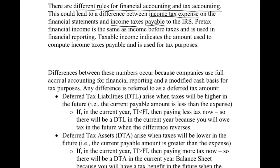Pre-tax financial income is the same as income before taxes. In this chapter, we'll refer to this as FI — financial income — which is on your income statement just before the income tax expense line. And then we'll have taxable income, which I'll abbreviate as TI. That indicates the amount used to compute income tax payable, and it's used for tax purposes.